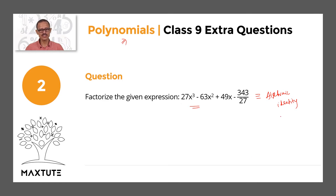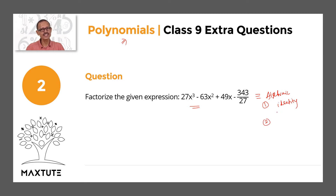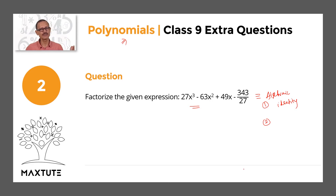So two steps: comparing it with an algebraic identity, the expansion of it. And then the second step — factorizing — is nothing but saying that this can be written as that algebraic identity's non-expanded form. That's the answer to this question. Let's get started.